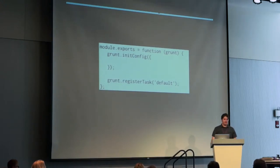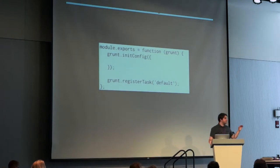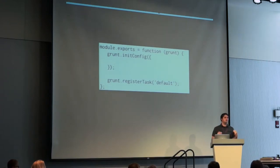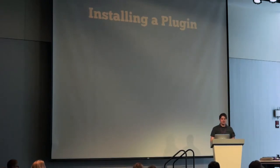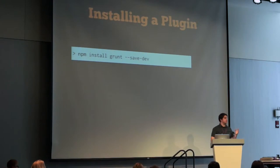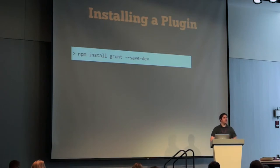This is our Gruntfile.js — and again, this is a basic boilerplate. Every Grunt file is going to start with at least this. The module exports and all that is just boilerplate code you're never going to touch. What we're going to focus on more is what's in between. Don't get too intimidated if you don't recognize a lot of these commands, because you're never really going to have to mess with them. So now let's talk about installing a plugin. We have our package.json file and our Grunt file — everything's in place but it's not doing anything yet. The first plugin you have to install for a Grunt project is Grunt itself.